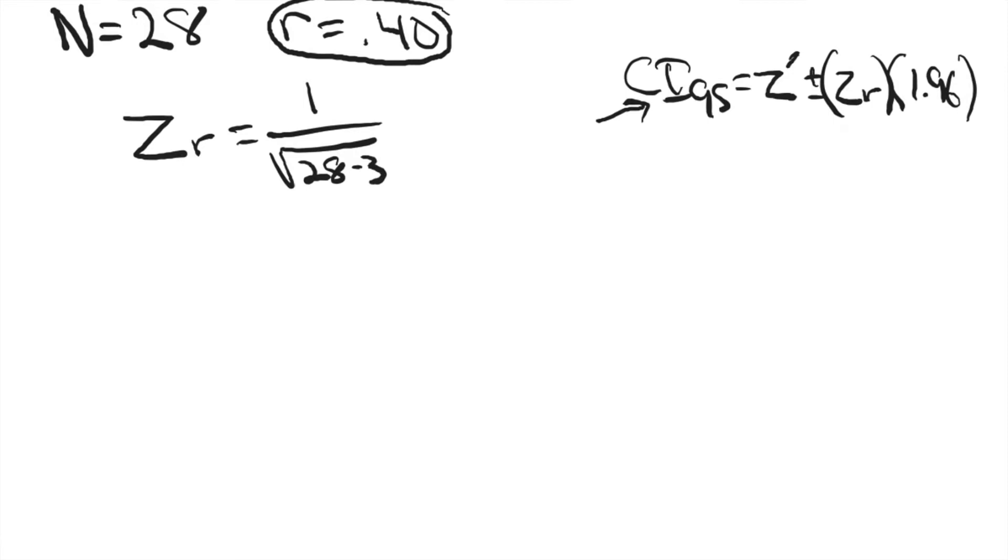So first, let's calculate this standard error of the correlation coefficient. The formula is 1 divided by the square root of the sample size minus 3.